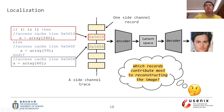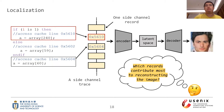Let's see how we localize side-channel leaks in media software. In the rest of this presentation, I will use image as the example, whose conclusion can be extended to other media data directly. The localization can be done by answering the question: which records contribute most to reconstructing the image? More specifically, we use Intel PIN to collect side-channel traces, and at the same time log the corresponding instructions of each side-channel record. As a result, the vulnerable program points can be localized by mapping the most important records back to their instructions.